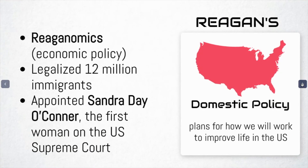In addition to his economic policy, Reagan also legalized over 12 million immigrants who were mostly from South and Central America. Reagan also appointed the first female to the US Supreme Court — her name is Sandra Day O'Connor, and she's actually from El Paso.